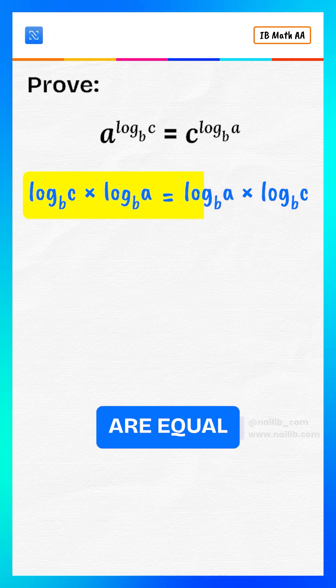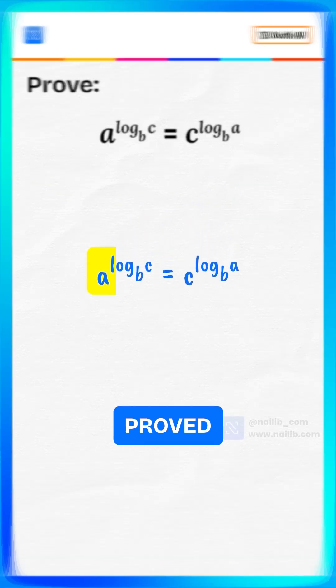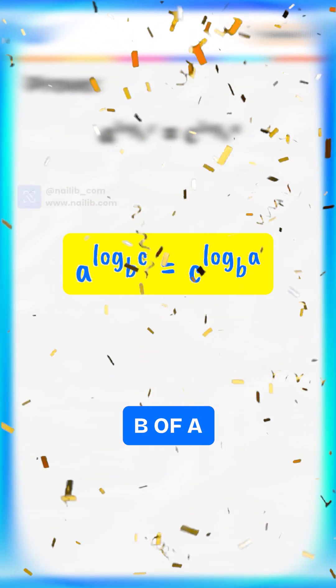Both sides are equal. Therefore, we've proved a to the power log base b of c is equal to c to the power log base b of a.